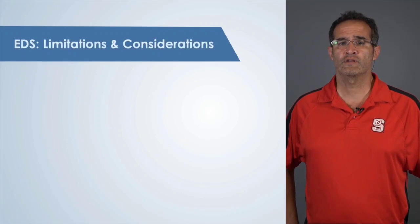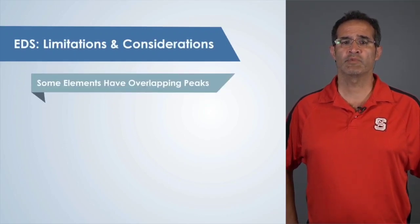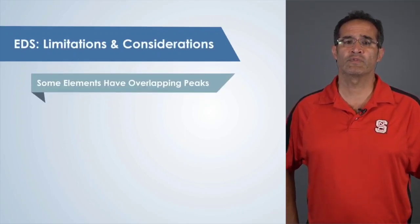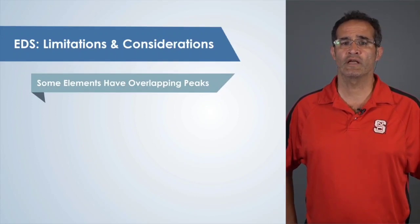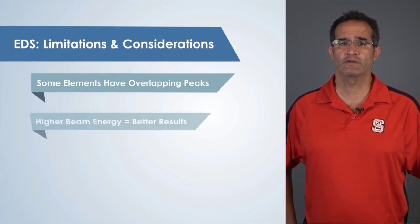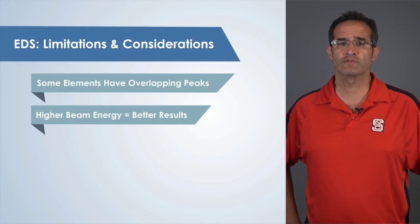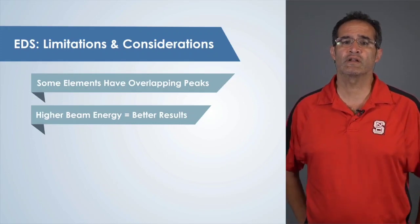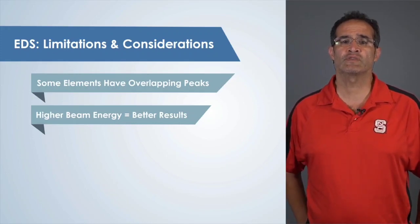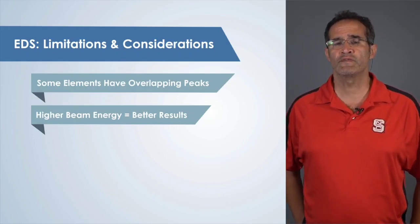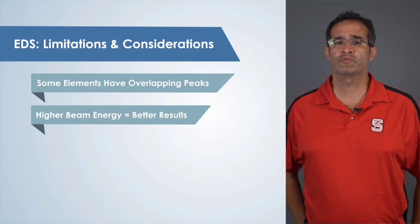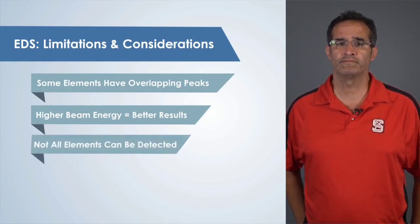Here are important things to note about EDS. Some elements have overlapping energy peaks with other elements, and careful analysis and experience will help avoid a misidentification. EDS requires a lot of energy to generate enough signal to get a conclusive result. Generally speaking, you want to make sure you are exciting enough x-rays by using a high voltage in the range of 15 to 30 kV to produce plenty of signal that can be used to identify elements present in the sample.